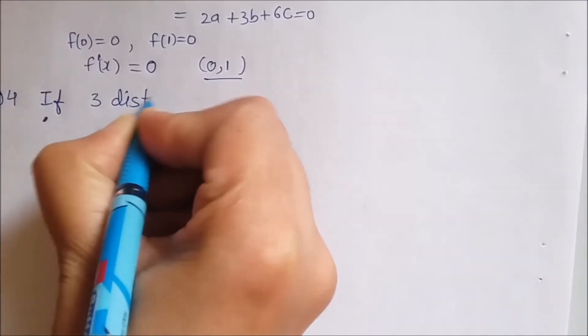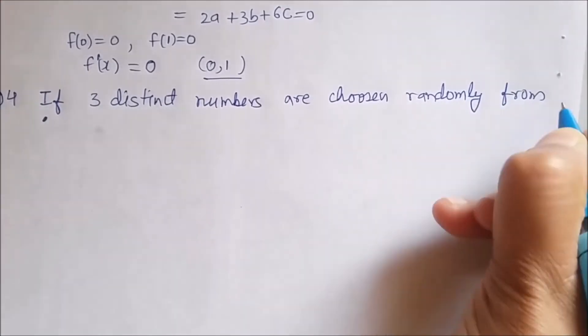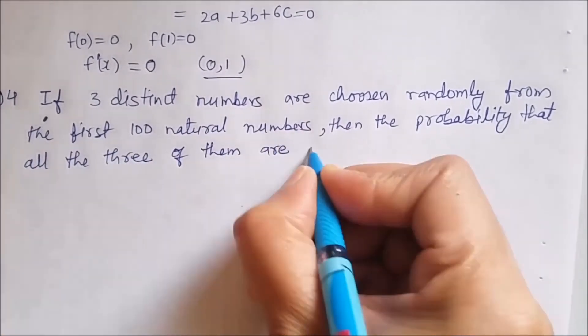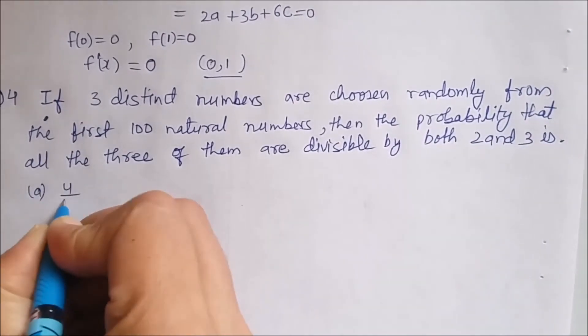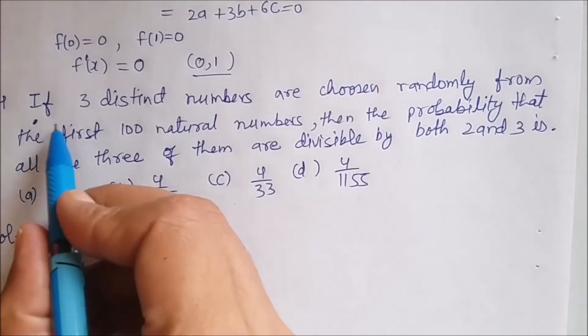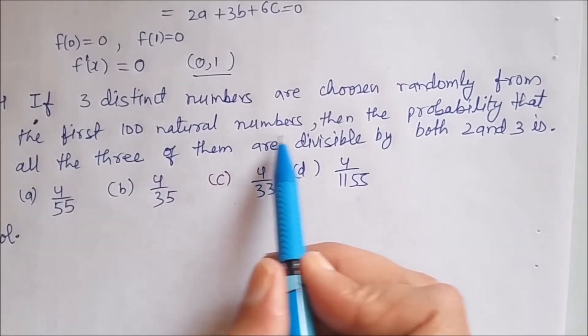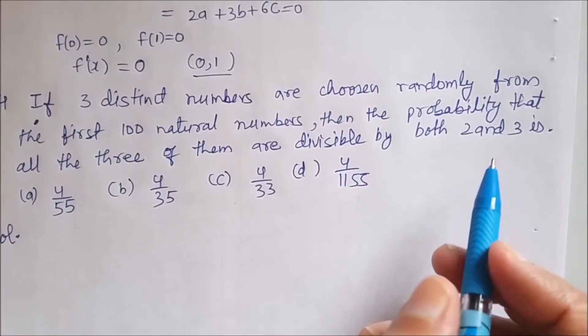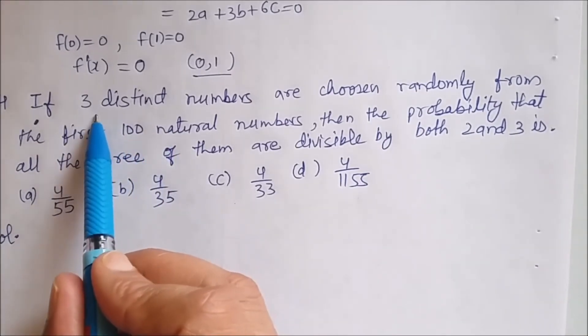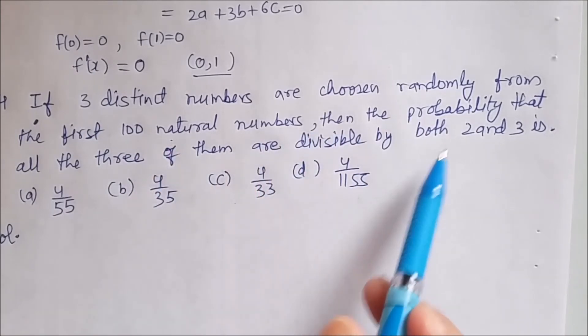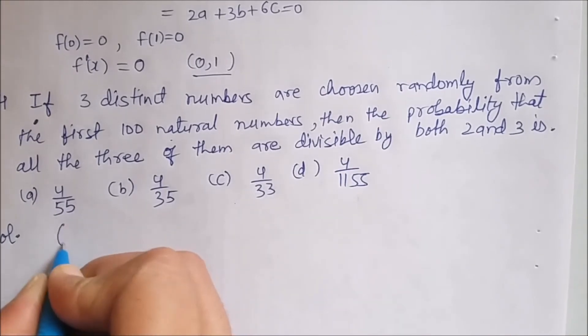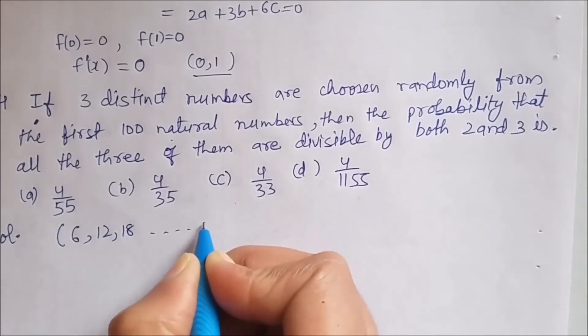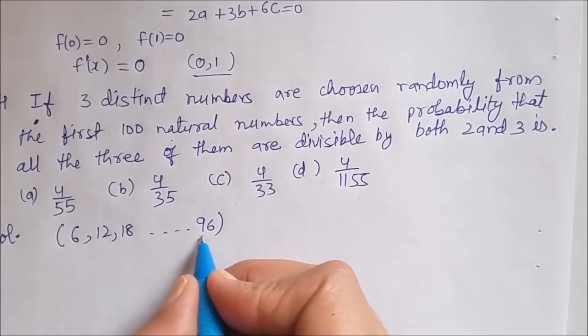Question number 4. If 3 distinct numbers are chosen randomly from the first 100 natural numbers, then the probability that all 3 of them are divisible by both 2 and 3 is. Now let us see how to do the solution. We have to select 3 distinct numbers from first 100 natural numbers. And the numbers should be divisible by both 2 and 3. So the numbers are to be selected from the set. The first number that is divisible by both 2 and 3 is 6. Second is 12. Then 18. Like this it will go on till 96.